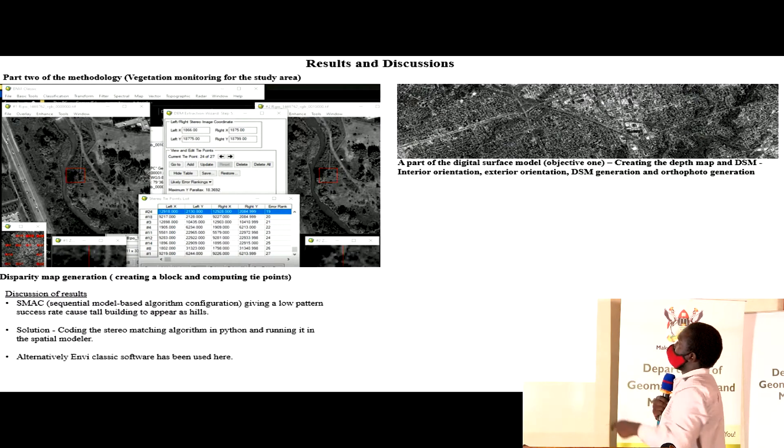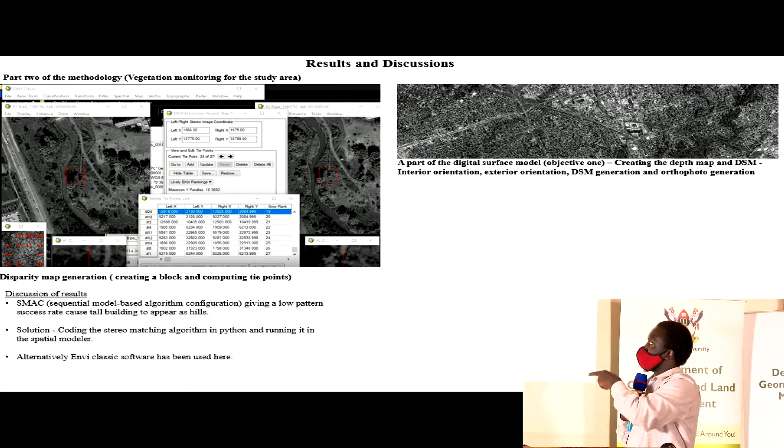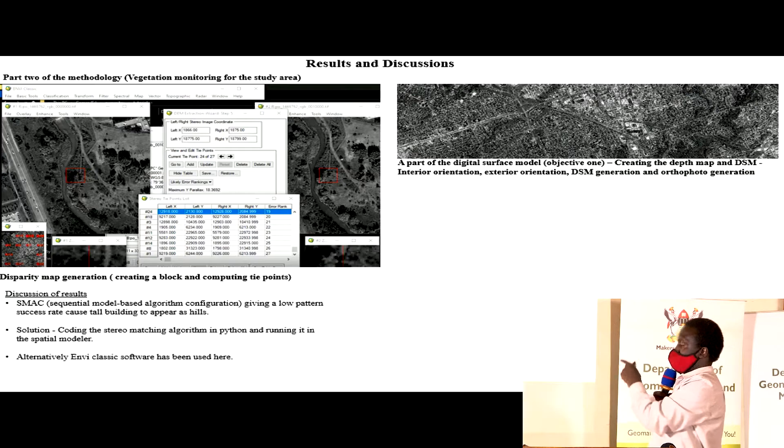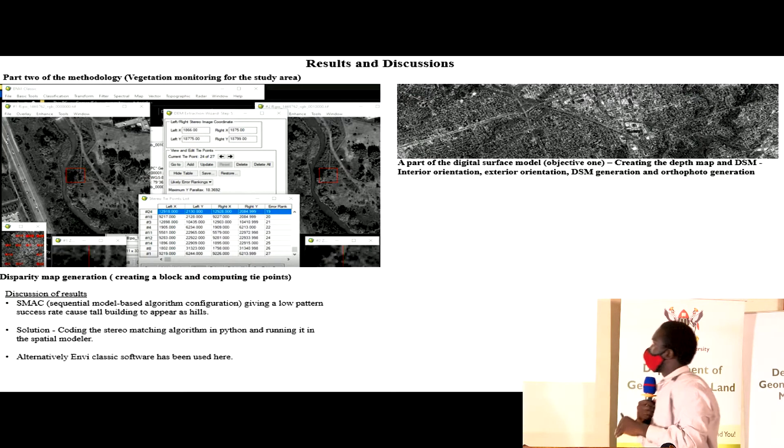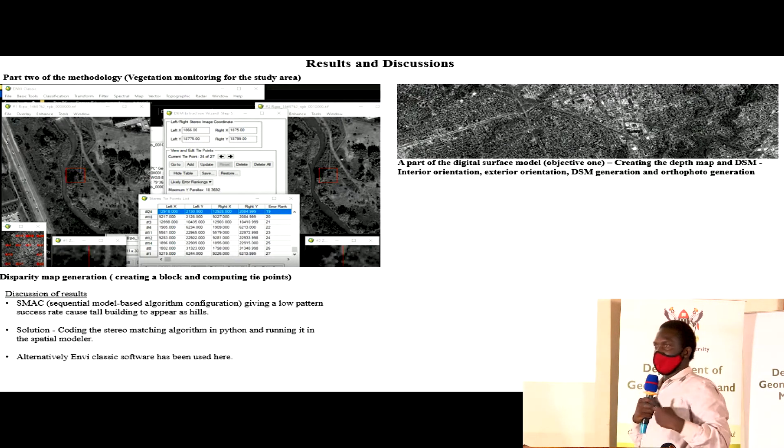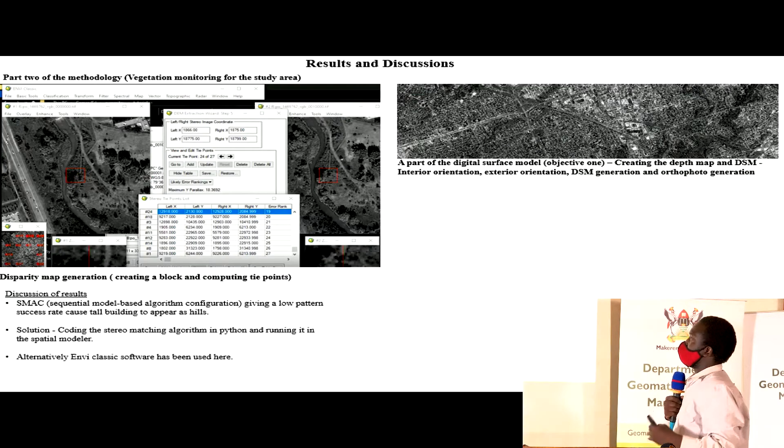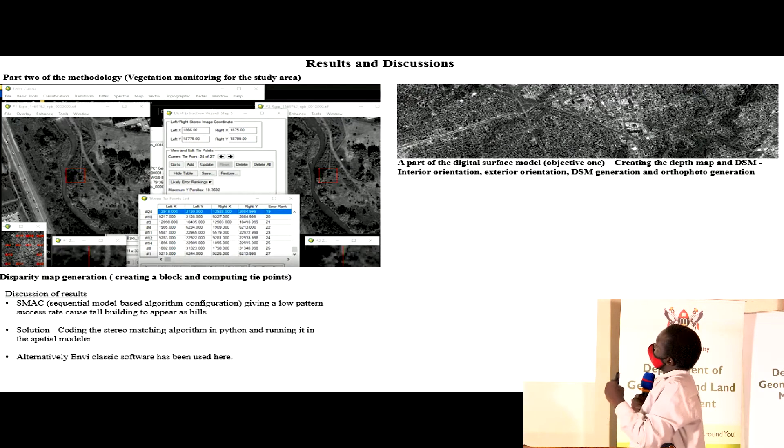There are issues. If I just run the digital surface model normally, I will get issues like buildings appearing as hills. That issue is because the semi-global matching algorithm that most software uses hasn't given the best match percentage. The match percentage is still low, which is why buildings appear as hills in the digital elevation model.